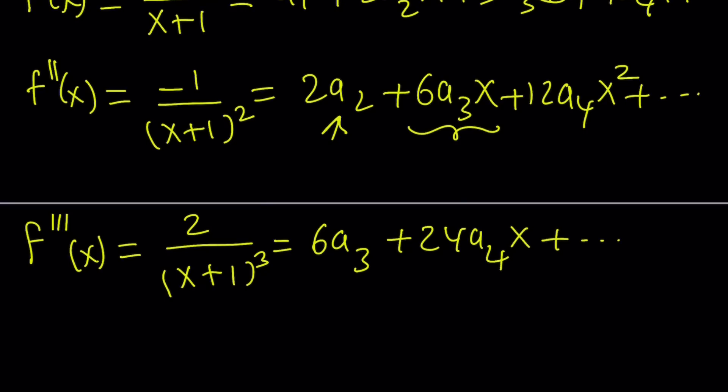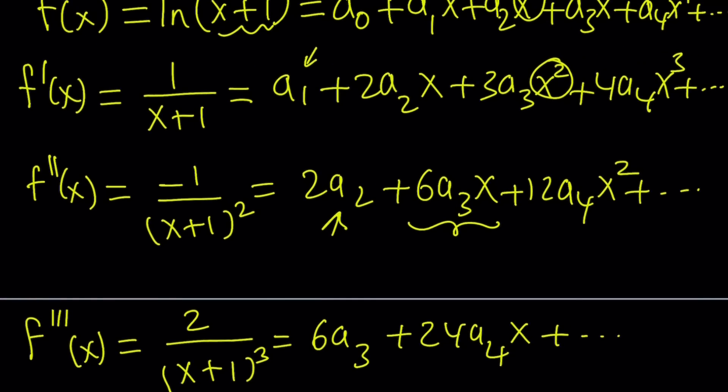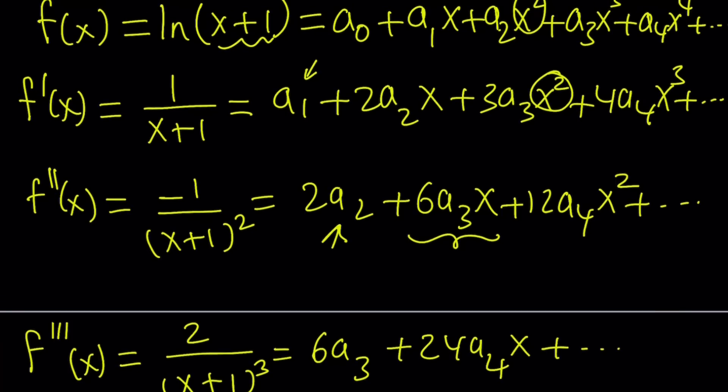And notice that the 6 comes from 3 times 2. 24 comes from 4 times 3 times 2. It's kind of like factorials. Make sense? And the 2 is, of course, 2 factorial. Now, we got the function itself and the first, second, and third derivatives.